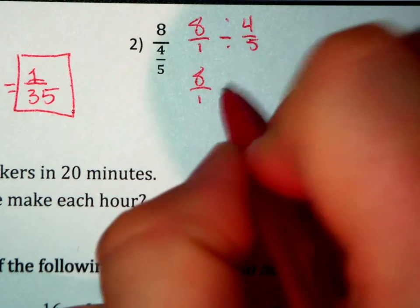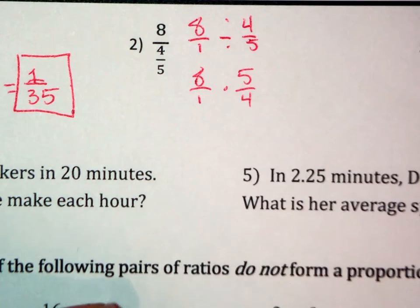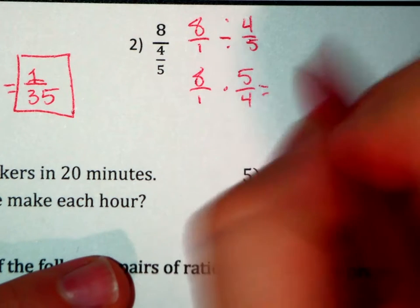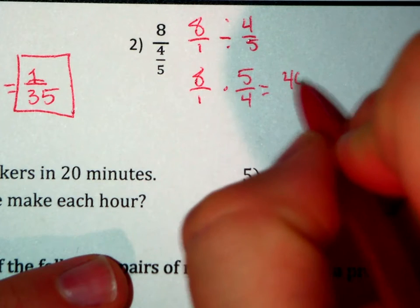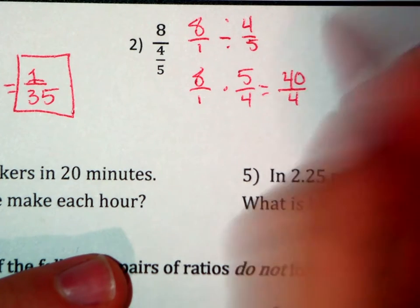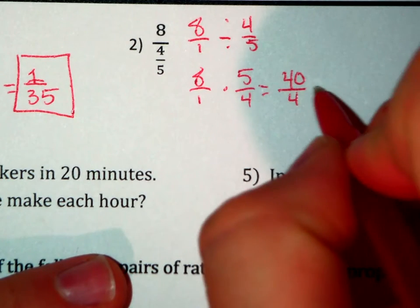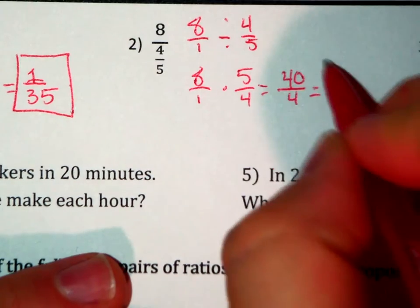8 over 1, we keep our first fraction, times 5 over 4, flip the second fraction, equals 40 over 4. 4 goes into both of those terms, which will give me 10 over 1, but I know 4 goes into 40 10 times, so my solution is just 10.